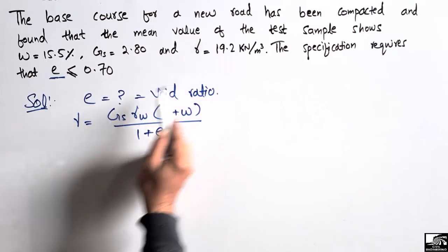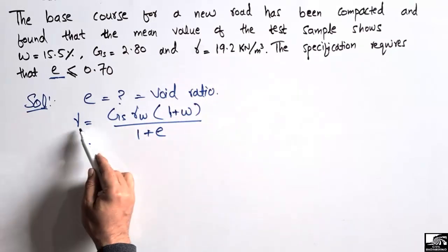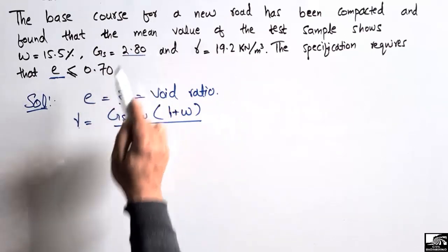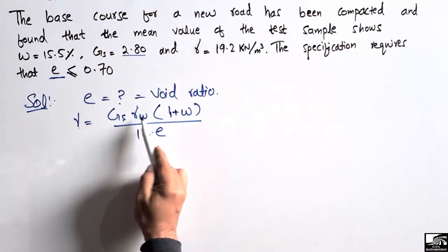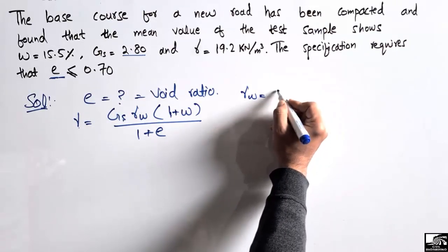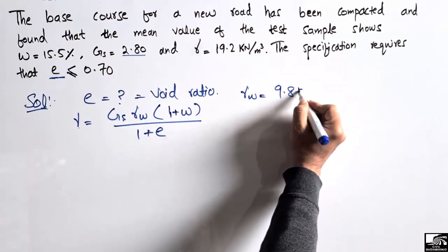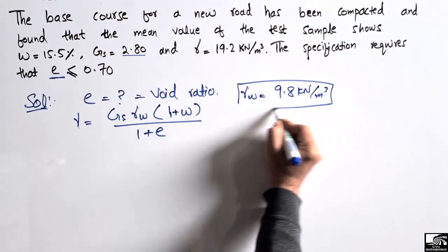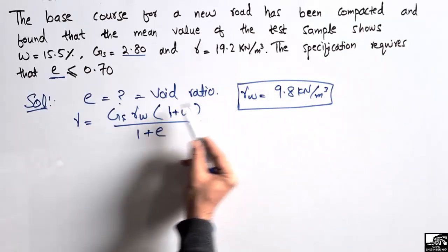The γ is given to us, which is 19.2, the unit weight of the soil. Gs is the specific gravity which is also given to us. γw is the unit weight of the water and it is taken as 9.8 kilonewtons per cubic meter.